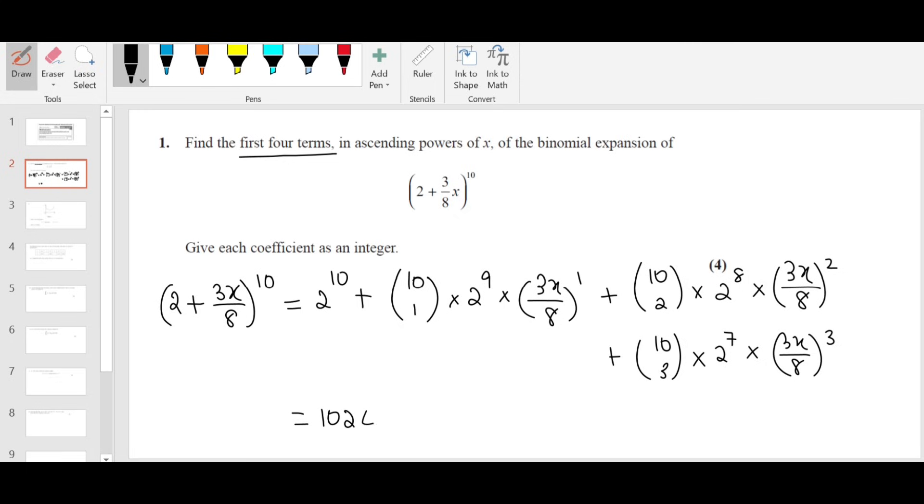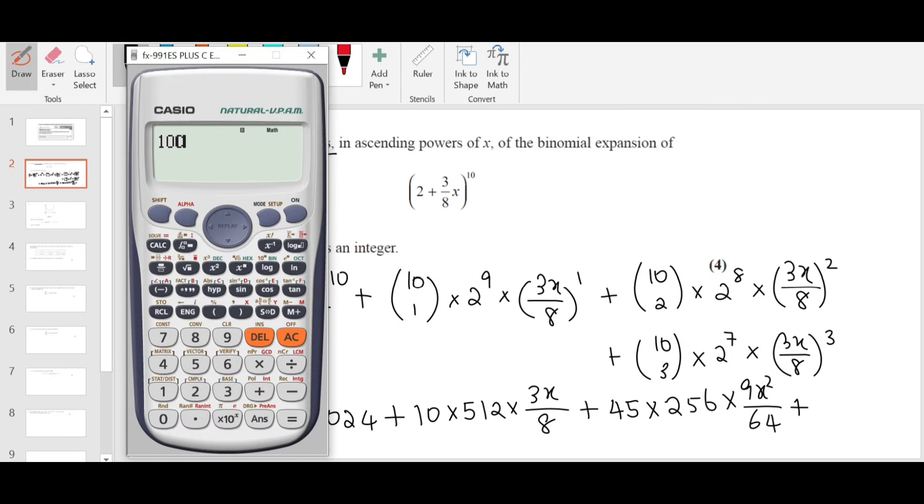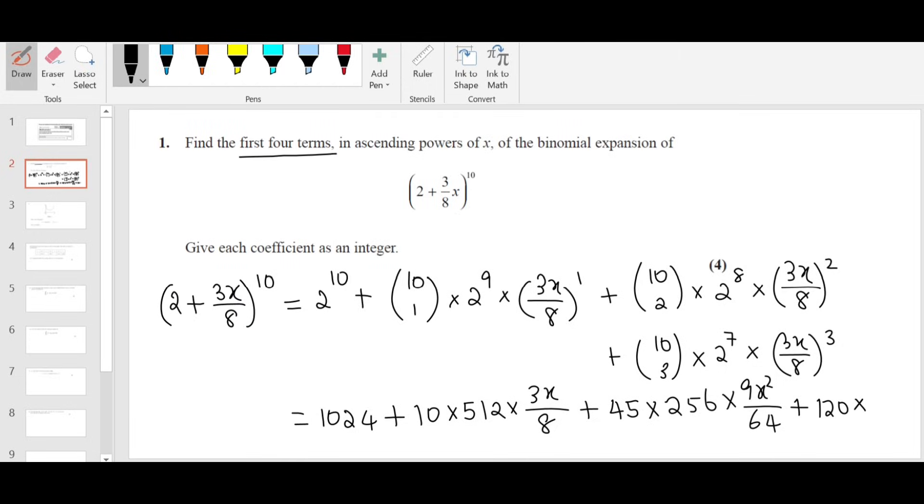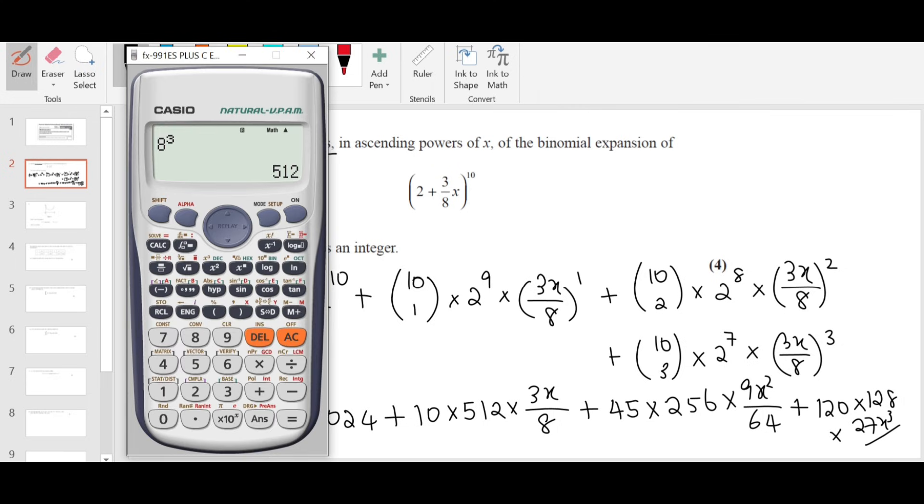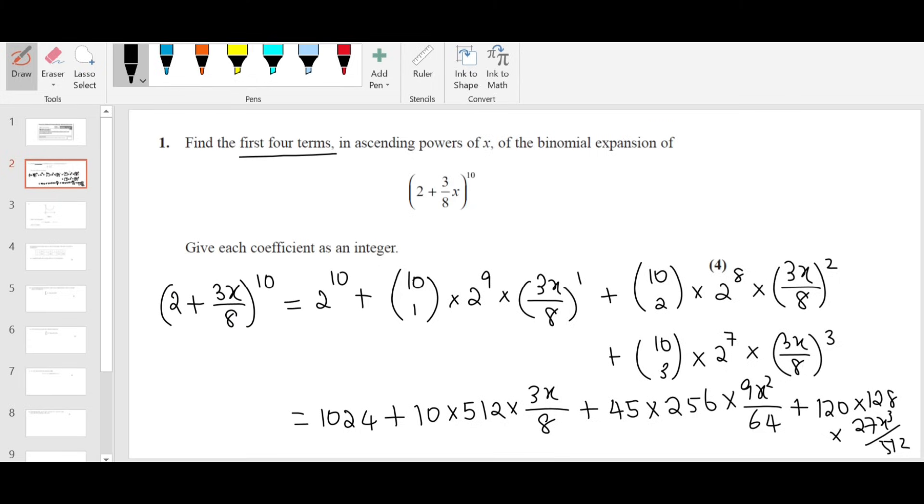2 to the power 10 is 1024 plus 10c1 is 10, 2 power 9 is 512 times 3x over 8 plus 10c2, which is 45, times 2 power 8 is 256 times 3x whole square, 9x square over 64, plus the last term 10c3 is 120 times 2 power 7 is 128 times 3 cube, 27x cube divided by 8 cube, which is 512.